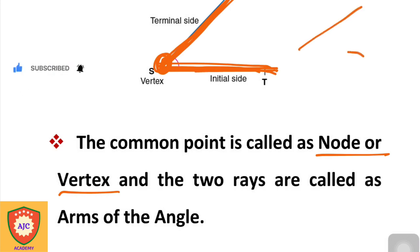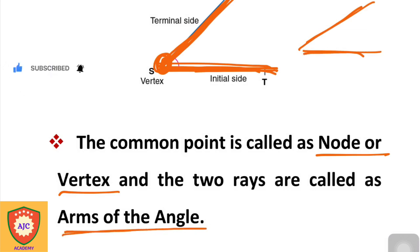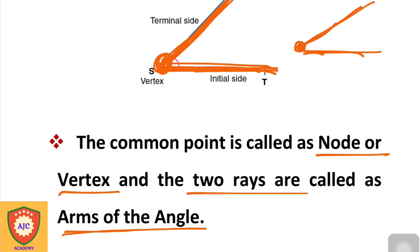So we have two rays. If we say vertex or node, we refer to that common point. The two rays are called the arms, and these are the main parts and definition of an angle.